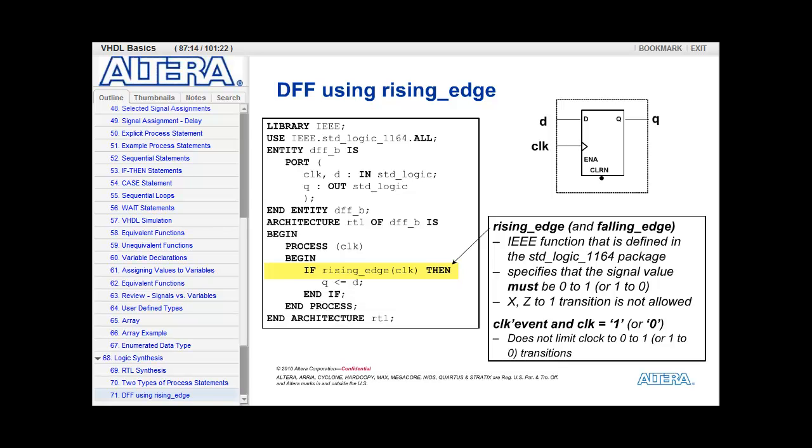As a note, I do want to point out that some designers, instead of using the rising edge function, will use the clock tick event and clock equals 1 phrase. What this says is that has there been a transition or event on the clock signal such that the result is 1, thus a rising edge clock. For a falling edge transition, you can say clock tick event and clock equals 0. While the rising edge function and the clock tick event and clock equals 1 will both synthesize to the same logic, a D flip-flop or register, they are different in simulation. Whereas the rising edge again does specify the transition must be 0 to 1 or 1 to 0, the clock tick event and clock equals 1 or 0 does not. So, we do recommend you use rising edge and falling edge functions.